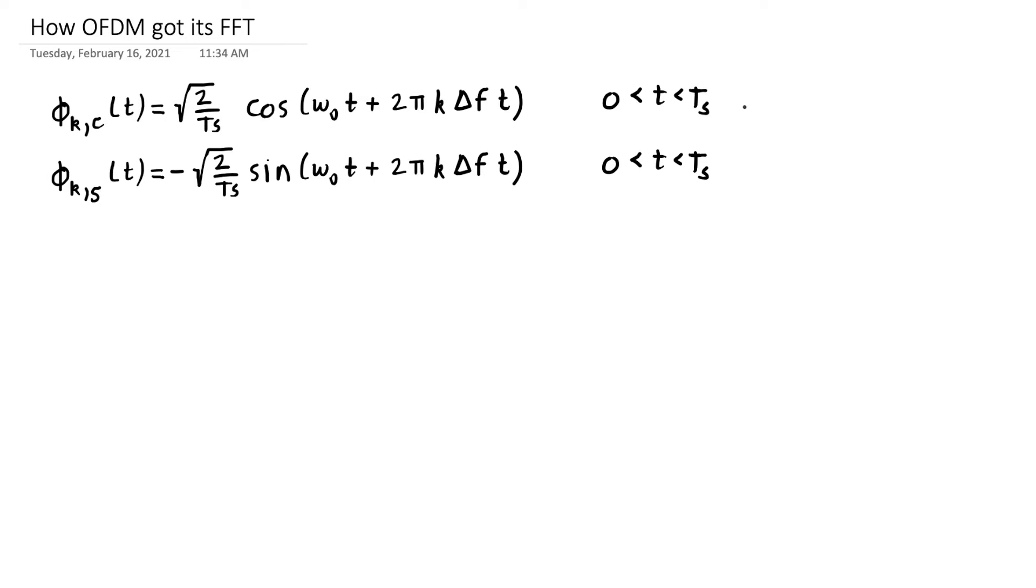We pick amplitudes based on some QAM modulation for each of the cosine and the sine basis functions. We're going to get something like this, and I'm going to write it as x_k to denote the signal produced on the kth subcarrier.